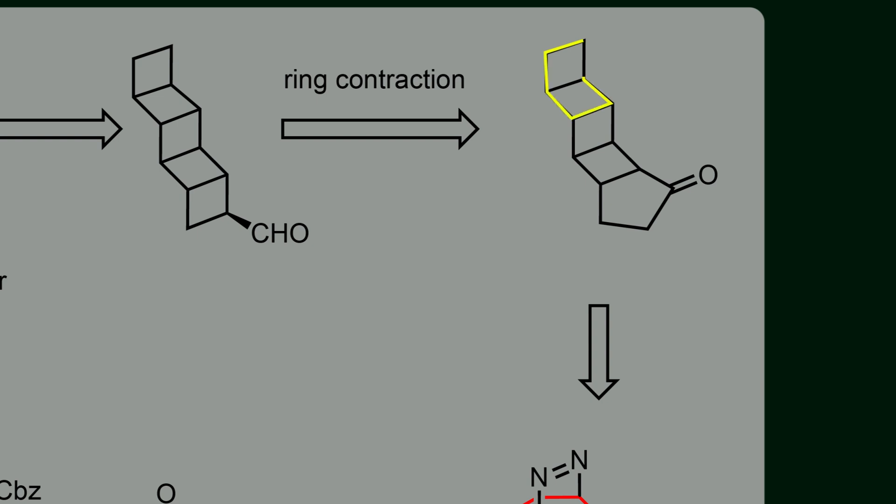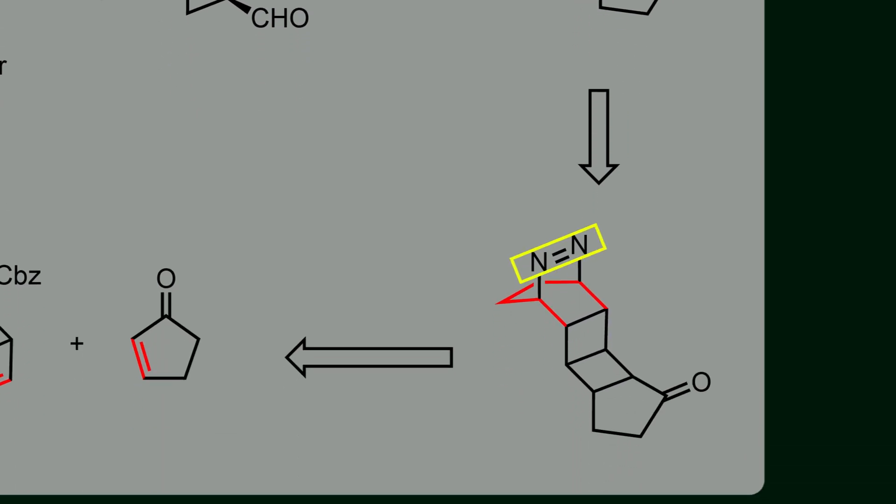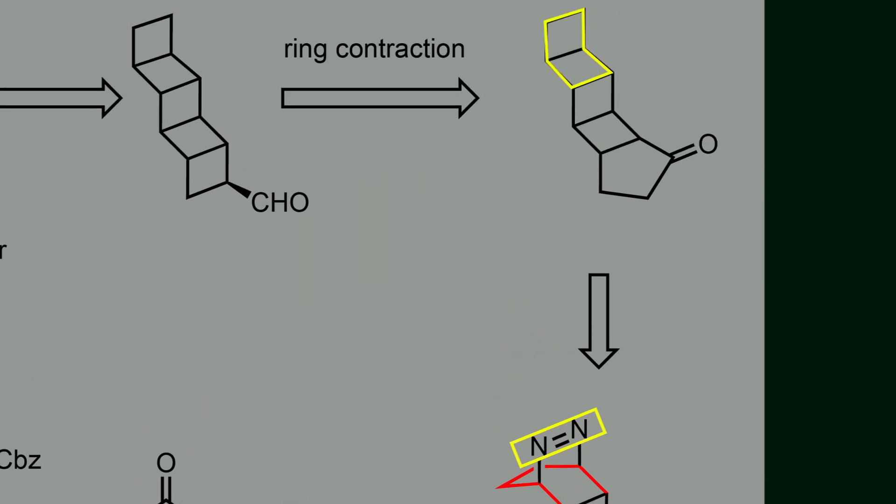These two cyclobutadiene rings can be achieved by expulsion of nitrogen gas from another species. Successful execution of this step is challenging due to side reactions such as fragmentation of cyclobutadiene rings and polymerization. But the most important challenge is the correct installation of these two cyclobutadiene rings.